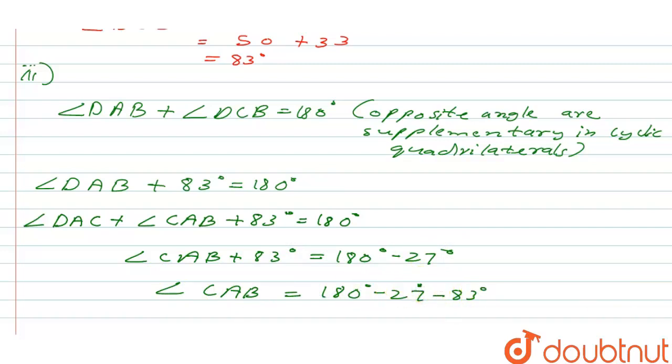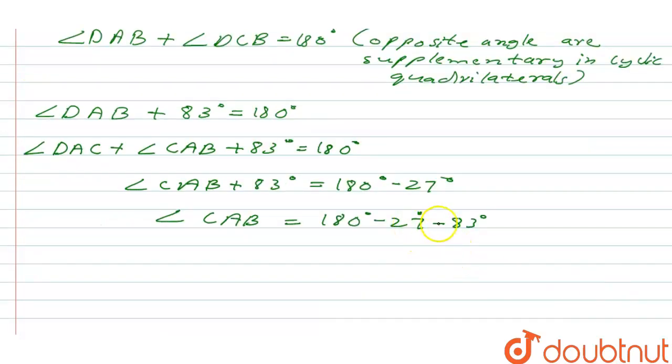So this is going to give us minus minus plus 110. So 180 degrees minus 110, which will give us 70 degrees. So this is our answer.